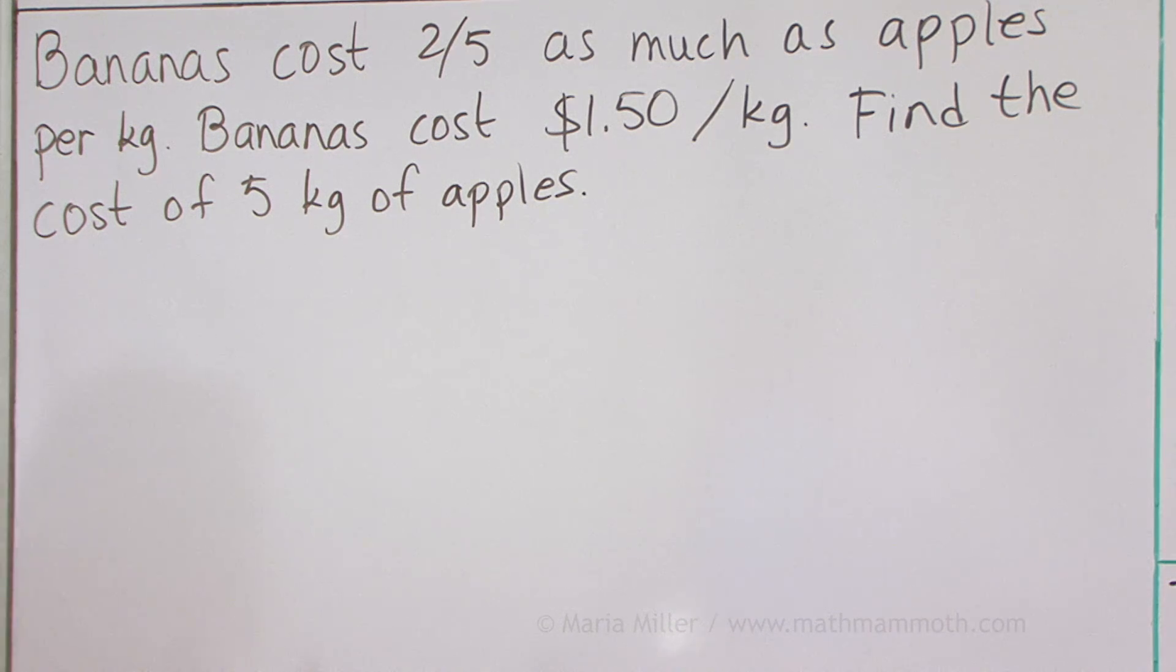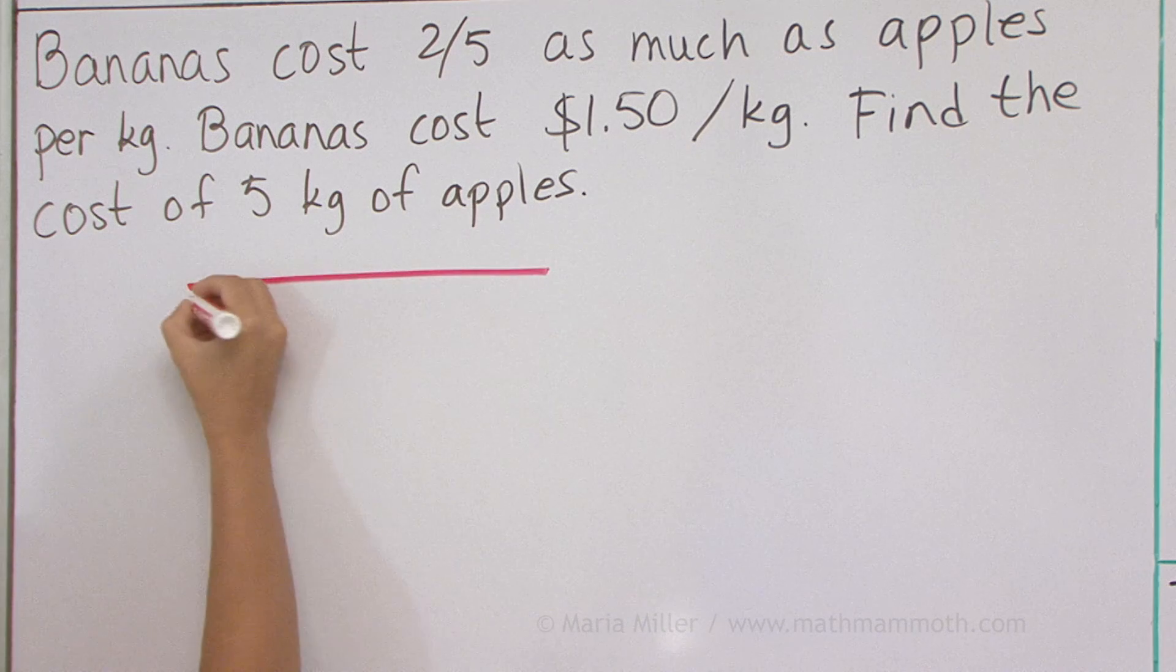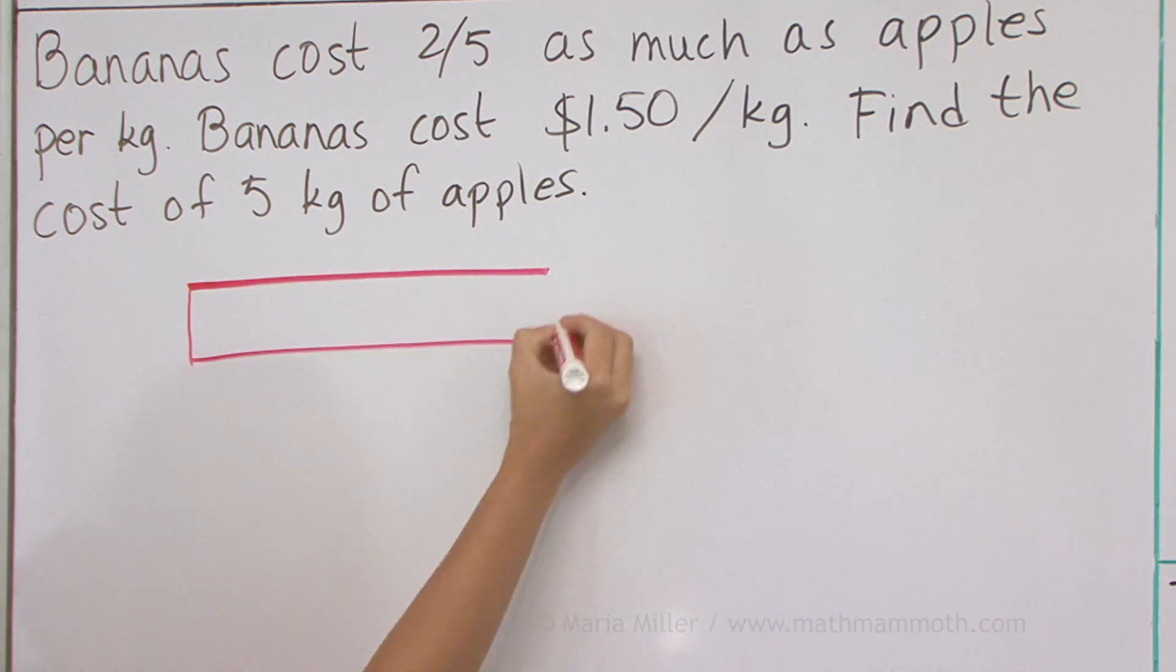See, bananas only cost this fraction of the price of apples. So apples are more expensive. So let's draw a long bar for the apples.